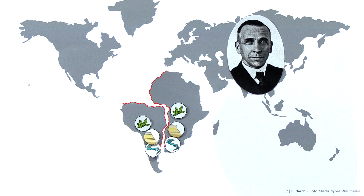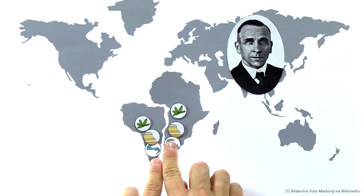From these observations, Wegener concluded that the surface of the earth consists of individual plates and that these plates are moving constantly. This means that Africa and South America used to be part of a single, contiguous landmass. Today we know that these lithospheric plates are swimming on a more liquid layer under them, the asthenosphere.